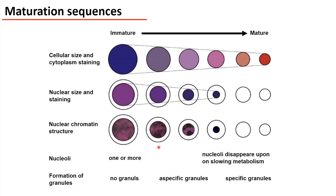Granules. Certain cells, especially the granulocytes, contain granulation. At the beginning, in the blast phase, there are no granules. However, during the maturation, first the azurophilic granulation comes. Later on, the specific granules will dominate the granules in the cytoplasm.